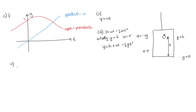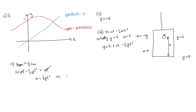Part four asks us to derive an expression for the time when the apple hits the floor. The apple hits the floor when the floor and apple are at the same location, so I set y_apple equal to y_floor: h plus vt minus half gt squared equals vt. The vt terms cancel, giving h equals half gt squared. Solving for t: t equals the square root of 2h over g.